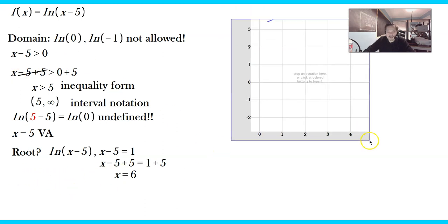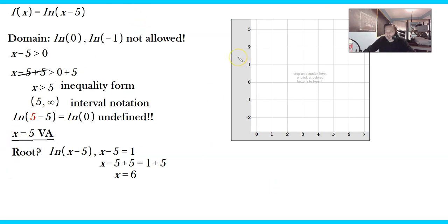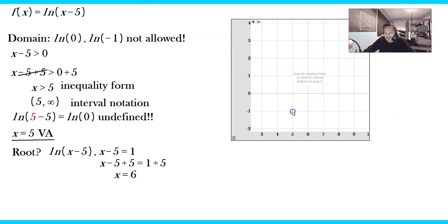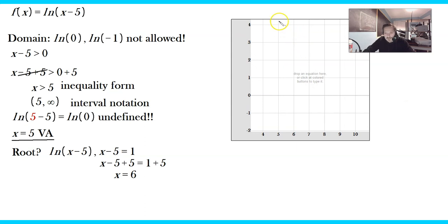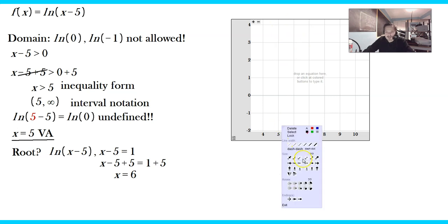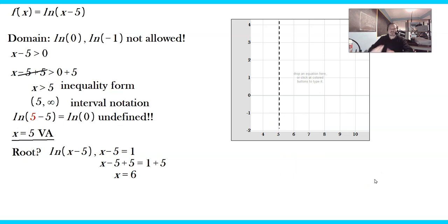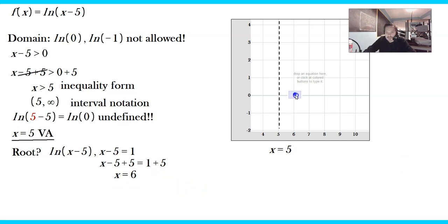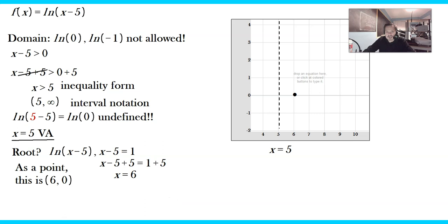Let me show you on a graph. The vertical asymptote is x equals 5, so you draw a dashed vertical line through x equals 5. Then at x equals 6, that's the root — you mark the point (6, 0). When 6 goes in, 0 comes out, and you can see that in the graph. 6 is the input and the y-coordinate of 0 is the output. So we have the vertical asymptote, the root, and the domain.